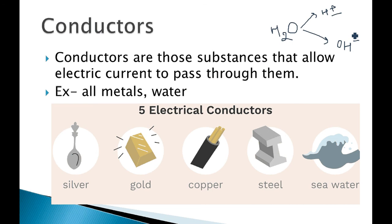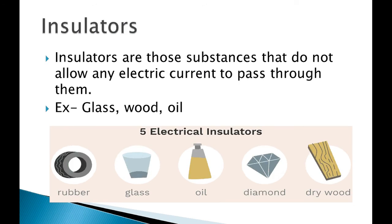The next one is insulators. Insulators are just the opposite of conductors — they do not allow electric current to pass through them.